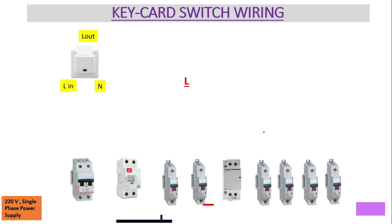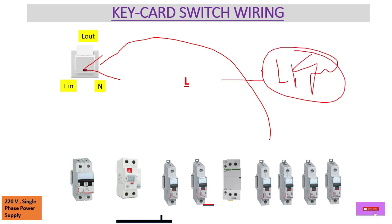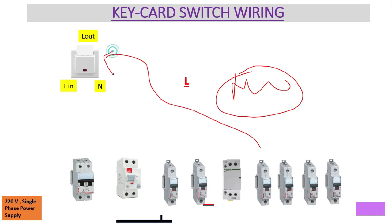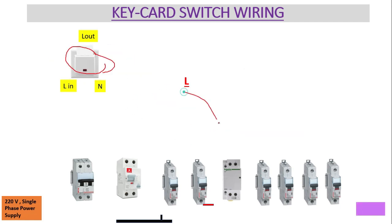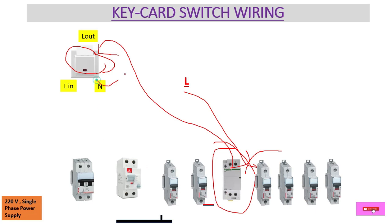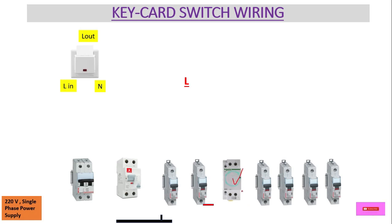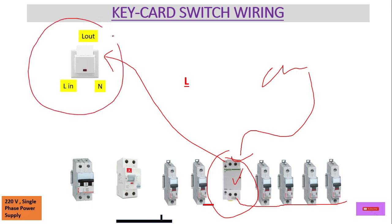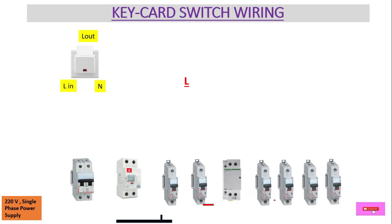This key card switch will operate the contactor. We generally do not put the load directly on the key card switch — for light loads we can, but for major loads like AC or kettles we cannot directly connect them to the key card switch. So it is better to use one contactor. The key card switch controls the contactor, and the contactor operates the load.